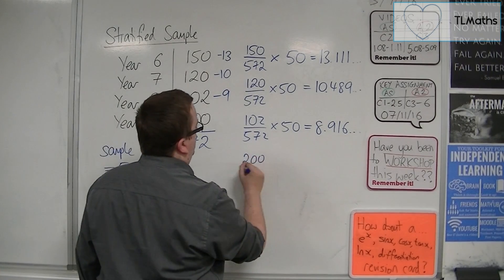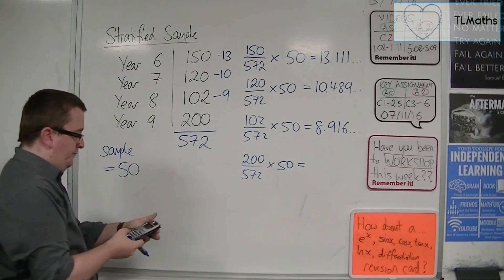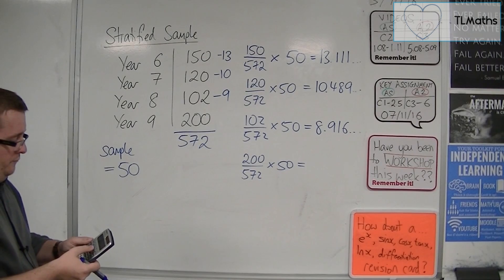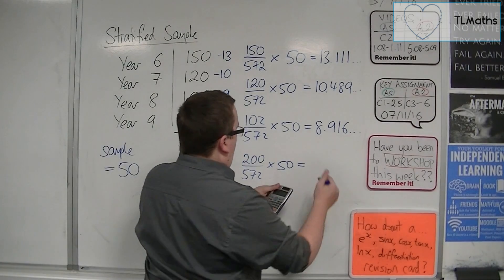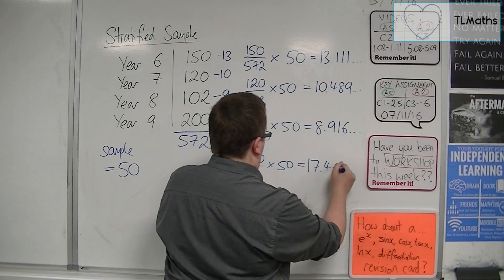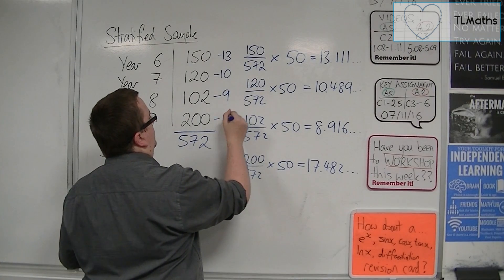And then year 9, finally, 200 out of 572 times by 50. And that gets me 17.482, etc. Okay, so that's 17 students for that one.